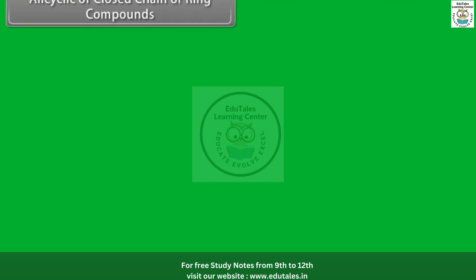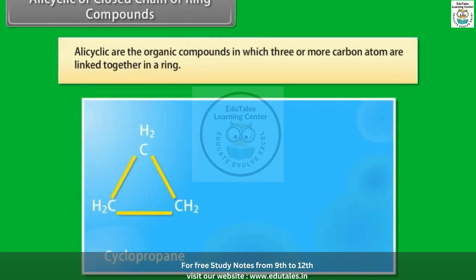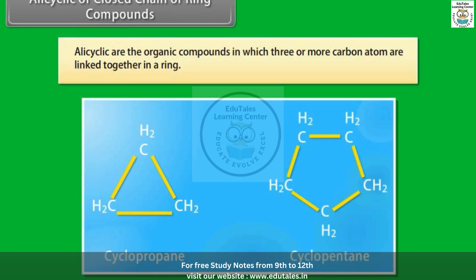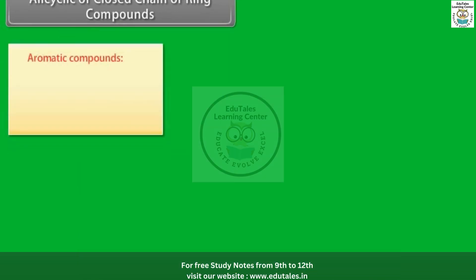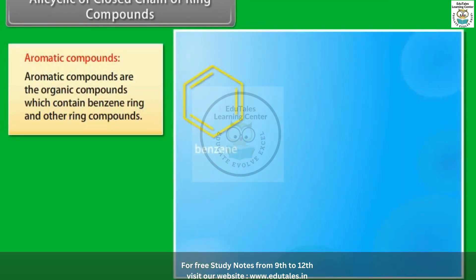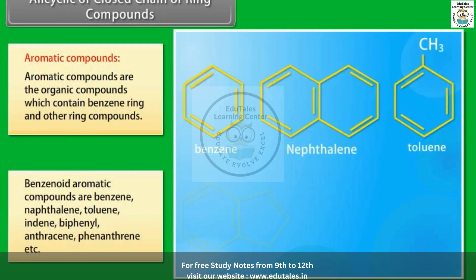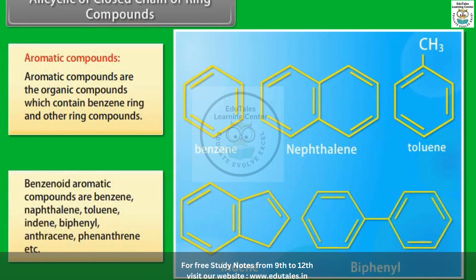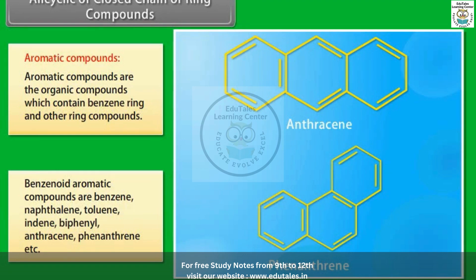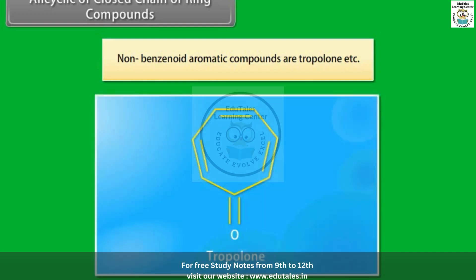Alicyclic or closed-chain or ring compounds: Alicyclic are the organic compounds in which three or more carbon atoms are linked together in a ring. Aromatic compounds contain a benzene ring and other ring compounds. Aromatic compounds can be further divided into benzenoid and non-benzenoid compounds. Benzenoid aromatic compounds include benzene, naphthalene, toluene, indene, biphenyl, anthracene, phenanthrene, etc. Non-benzenoid aromatic compounds include tropalone, etc.